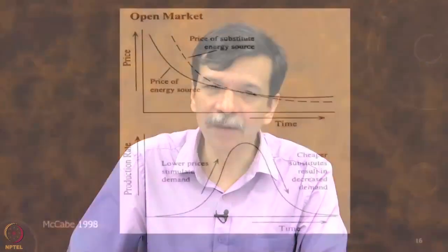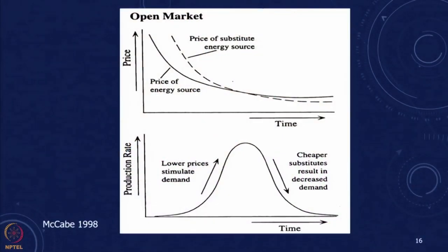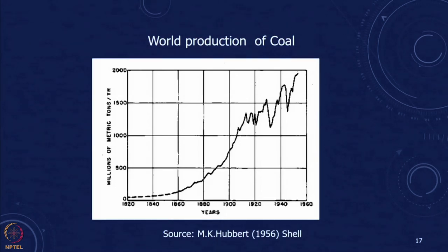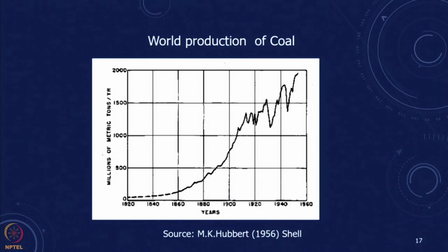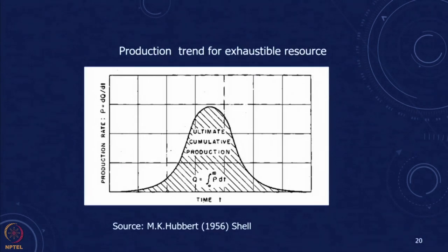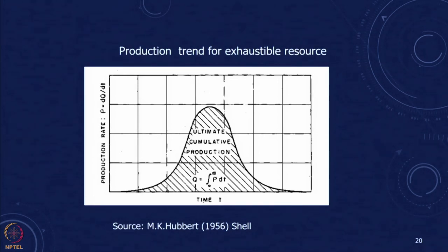Hubbert's analysis showed — and we will upload the original paper for you — that these plots all follow the trend seen through the 1960s: exponential growth in all resources. Looking at world production of coal, you can see it starts from a small amount and grows exponentially with some fluctuation. Similarly for world production of oil and US production of crude oil. He postulated that the overall production trend for any exhaustible resource will follow this kind of bell-shaped curve.